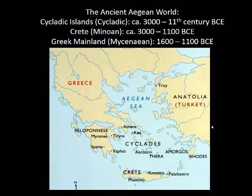This lecture is a very brief overview of the art produced during the ancient Aegean world. We divide the Aegean world into three cultural groups: the people of the Cycladic Islands, the Minoans who lived on the island of Crete, and the Mycenaeans who lived on the Greek mainland. On this map we can see the Cycladic Islands, Crete, the site of Knossos, and Mycenae on the Greek mainland.